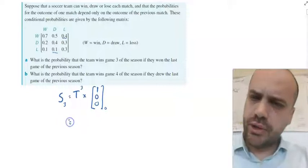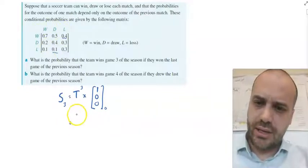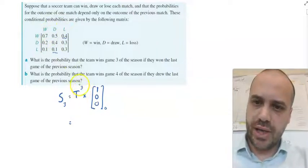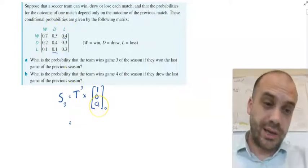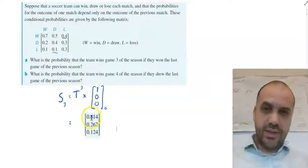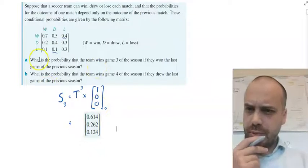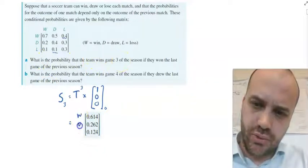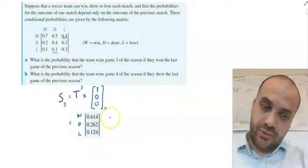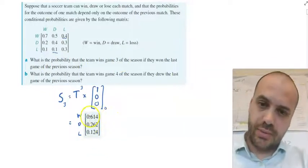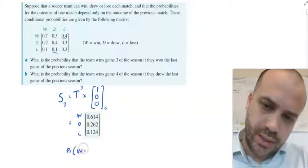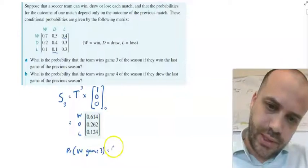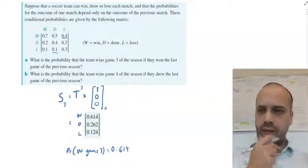So I'm not going to bother rewriting this T3 here. I'm just going to type this matrix into my calculator, raise it to the power of 3, multiply it by this, and I should get an answer. So there's our state after 3. What was the question? What is the probability that the team wins game 3? So it's win, draw, and loss. So our answer is not the matrix. Our answer is this number right here. Probability winning game 3 equals 0.614.